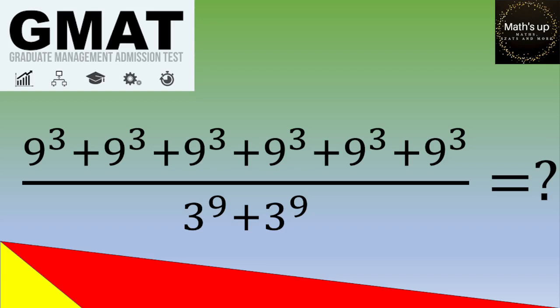Hello and welcome. In this video we have a GMAT exercise where we want to simplify a fraction. The fraction is 9 cubed plus 9 cubed plus 9 cubed plus 9 cubed plus 9 cubed plus 9 cubed over 3 to the power 9 plus 3 to the power 9. If you want to give it a try, please pause the video, otherwise let's see the solution.